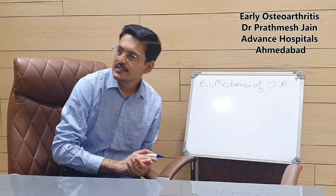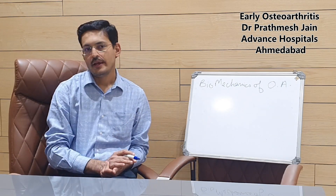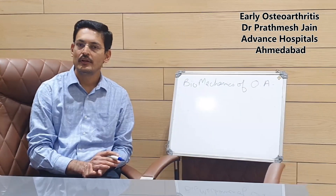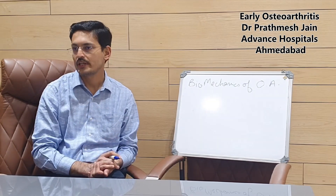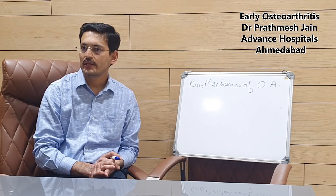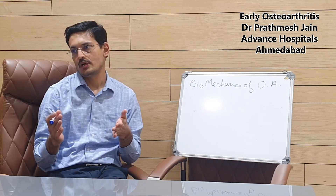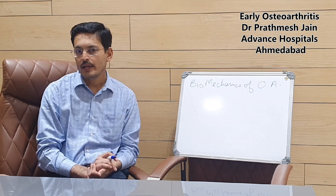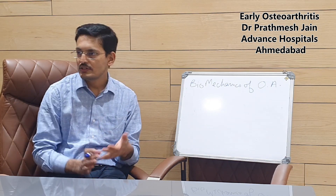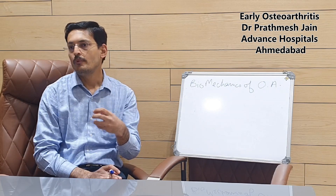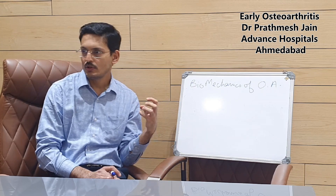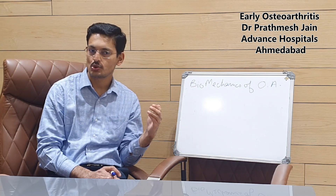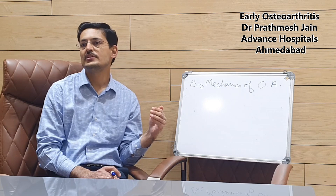Osteoarthritis is a progressive disease and the final answer to osteoarthritis is total knee replacement surgery. Previously, there was not a good understanding about the progression of osteoarthritis — why and how it progresses in a particular knee — and we could not do anything to protect the knee from progression of arthritis. Today we will be talking about why osteoarthritis occurs and how it progresses.